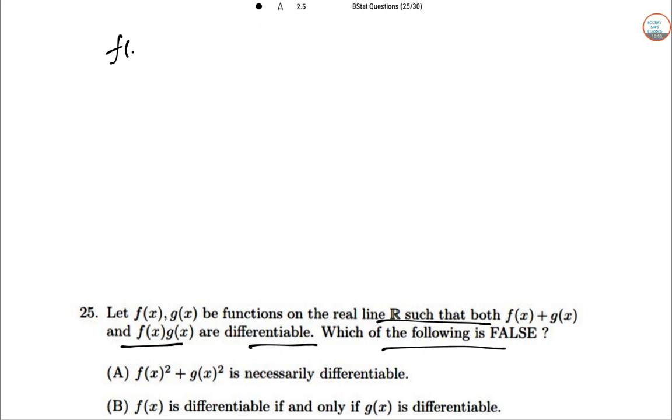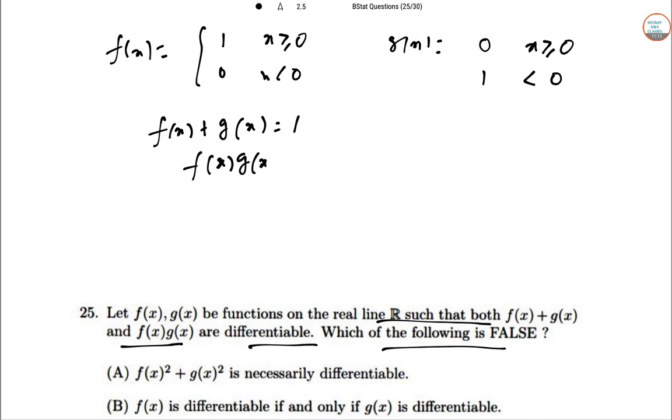Let F(x) = 1 when x ≥ 0, 0 when x < 0. G(x) = 0 when x ≥ 0, 1 when x < 0. So F(x) + G(x) = 1, F(x) × G(x) = 0. These are differentiable.